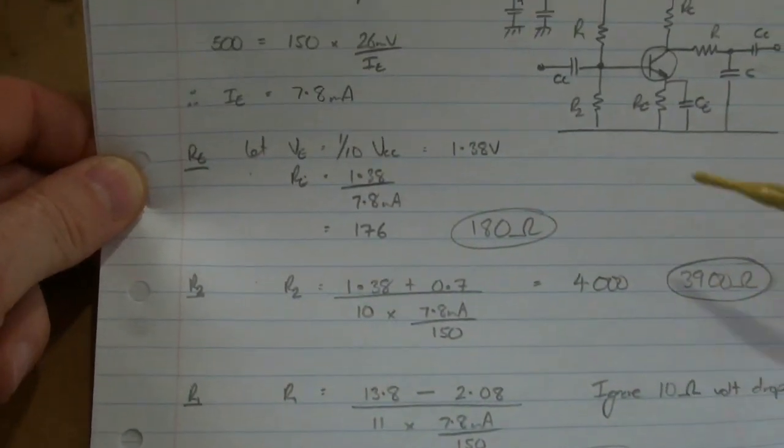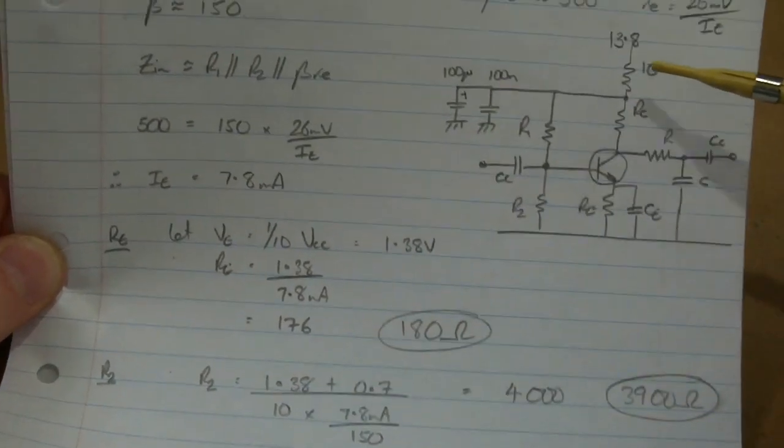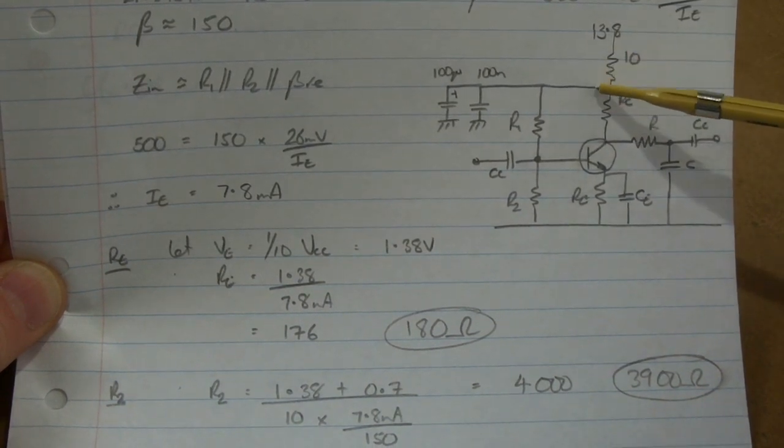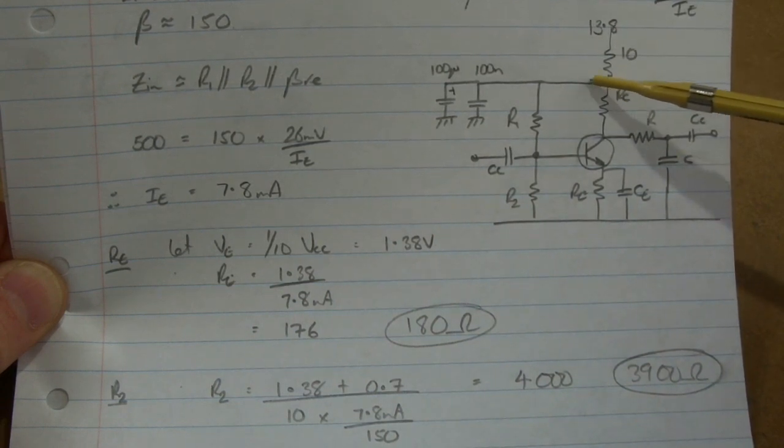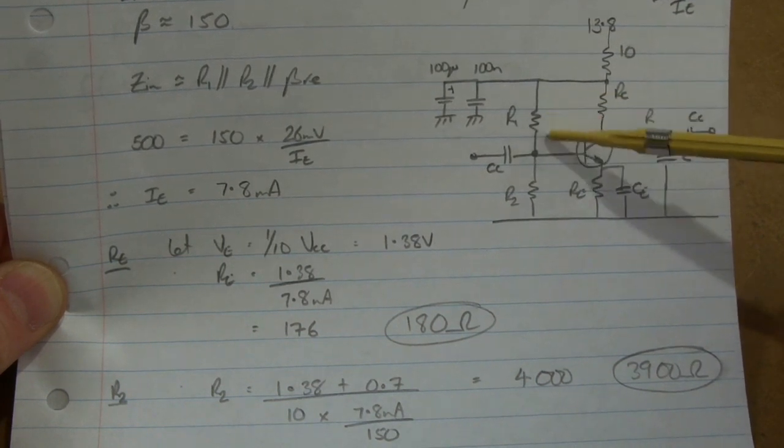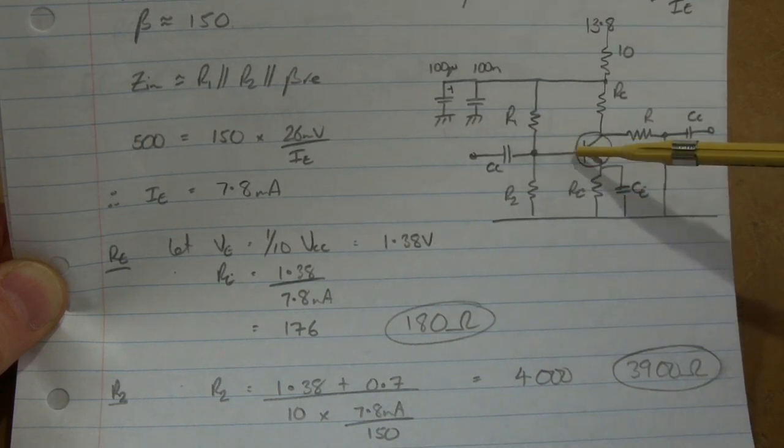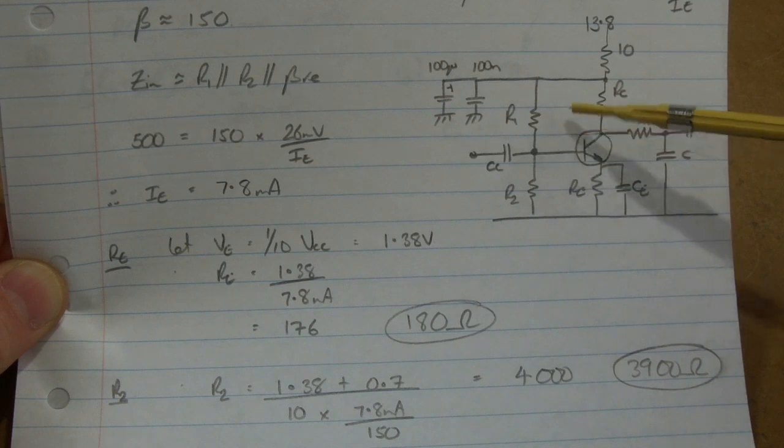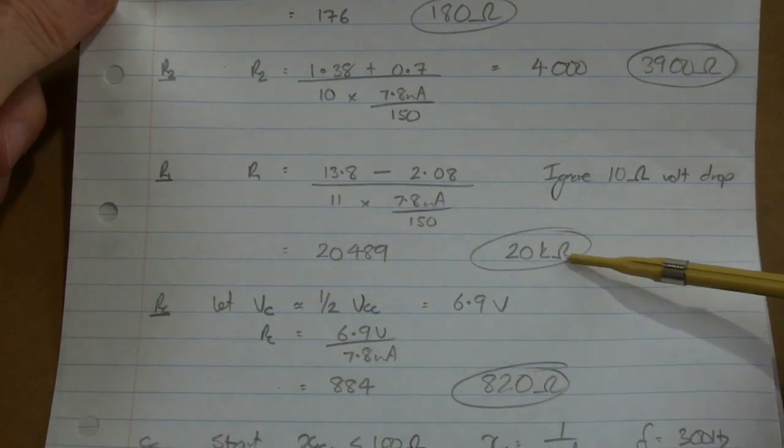As we've seen before, our R1, that's going to be 13.8 volts minus that voltage there. I'm going to ignore at this stage the voltage drop across that 10 ohm resistor. It's next to nothing, so it's approximately 13.8 will be sitting here. So 13.8 volts minus the voltage at the base divided by now 11 times the base current. I use electron flow, so the current flowing through here was 10 times. It gets to this point, there's another one being added to it, so it's now 11 times. So 11 times the base current under that voltage drop gives us 20489 ohms, so I'll use 20k ohms.